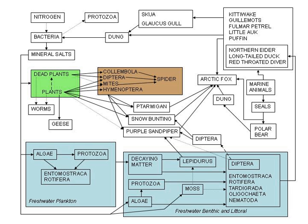The Blue Brain Project is an attempt to create a synthetic brain by reverse engineering the mammalian brain down to the molecular level. The aim of this project, founded in May 2005 by the Brain and Mind Institute of the École Polytechnique in Lausanne, Switzerland, is to study the brain's architectural and functional principles. The project is headed by the institute's director, Henry Markram. Using a Blue Gene supercomputer running Michael Hines's NEURON software, the simulation does not consist simply of an artificial neural network, but involves a partially biologically realistic model of neurons. It is hoped by its proponents that it will eventually shed light on the nature of consciousness.